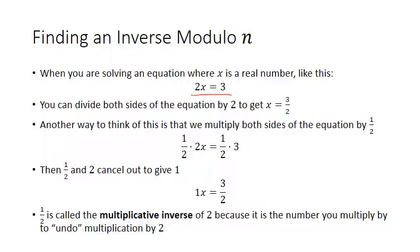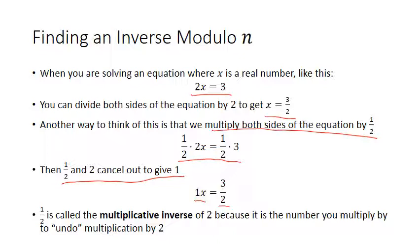Another way to think of that is multiplying both sides by 1/2. The 1/2 and the 2 cancel out, giving 1x equals 1/2 times 3, which is 3/2. This 1/2 is called the multiplicative inverse of 2, because that's the number you multiply by to undo multiplication by 2. So 1/2 is the multiplicative inverse of 2.